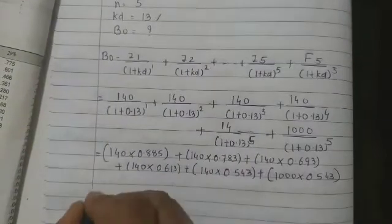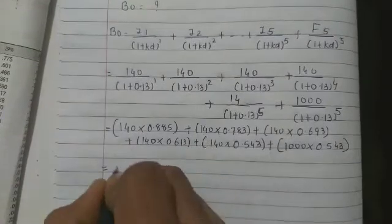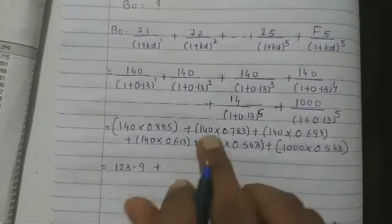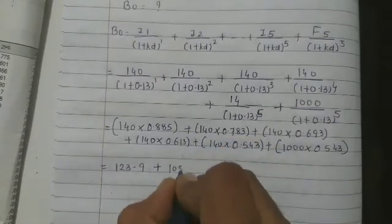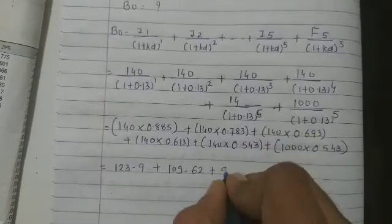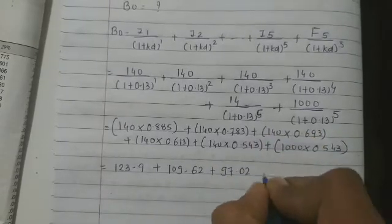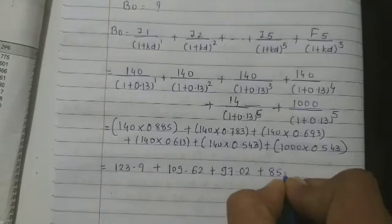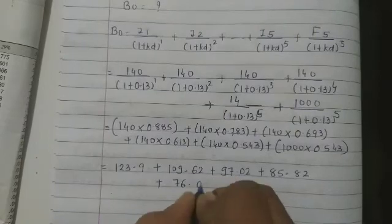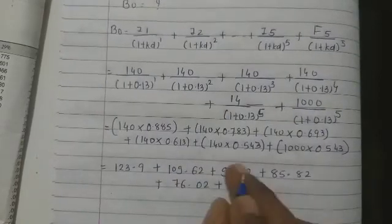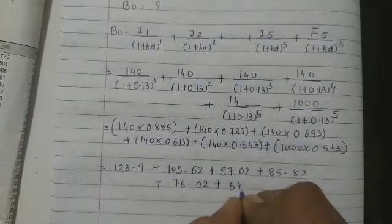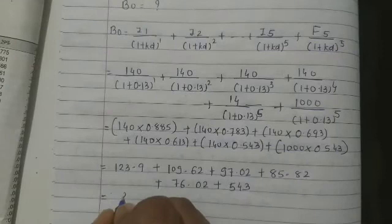So multiply these values. The answer will be 123.9 + 109.62 + 97.02 + 85.82 + 76.02, and 1000 × 0.543 = 543. So total of this is rupees 1035.38, the present value of the bond.